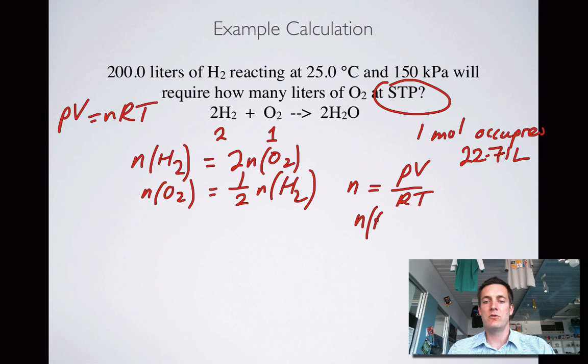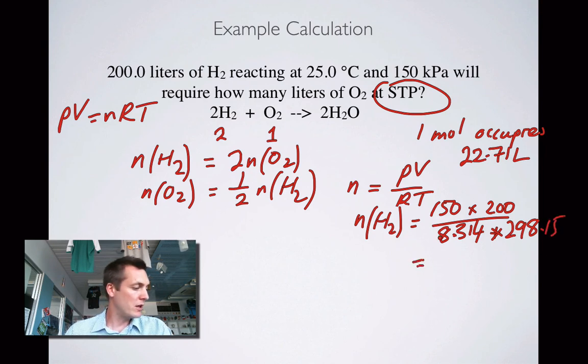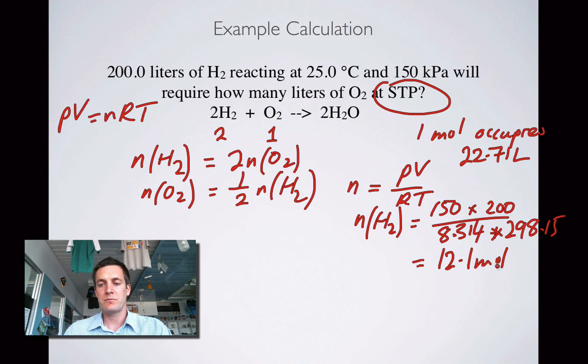We're actually being asked to find the number of moles of oxygen and the volume. So the number of moles of oxygen is a half of the number of moles of hydrogen. Can we find the number of moles of hydrogen? Yes, because n equals PV over RT. So the number of moles of hydrogen is equal to 150 multiplied by 200, and we're dividing that by RT, 8.314, our friend from the datasheet, and T which is now 298.15. Do that sum and you find that the number of moles of hydrogen is 12.1 moles.